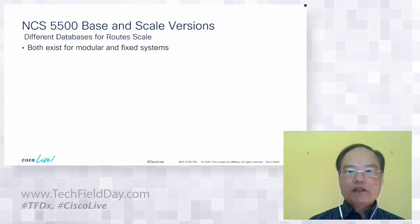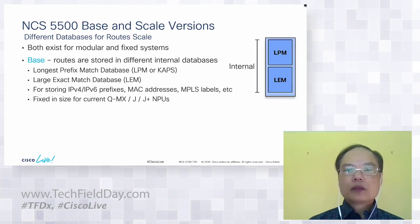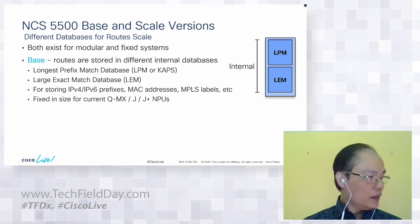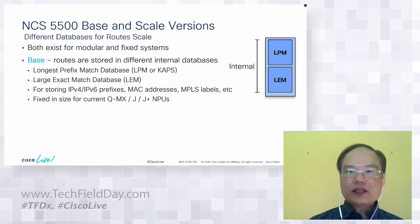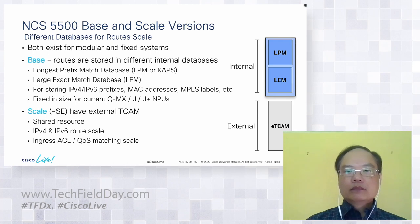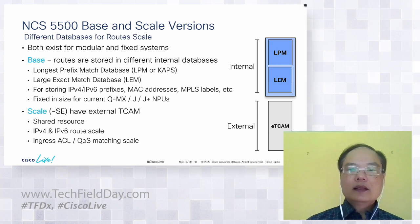There is a key concept of base and scale versions in NCS 5500 for both fixed and modular chassis. The base version uses the internal databases on the NPU, such as LPM and LEM, for storing prefixes, MAC addresses, and labels. These databases are currently fixed in sizes. The scale version has an external TCAM for additional route scale and increased ACL and QoS scale as well.